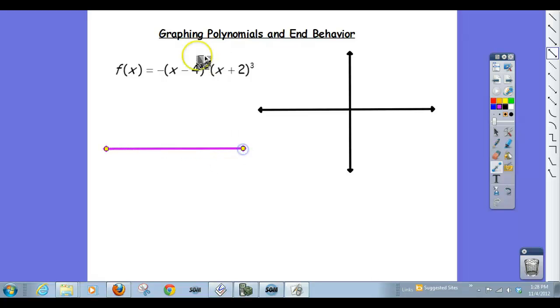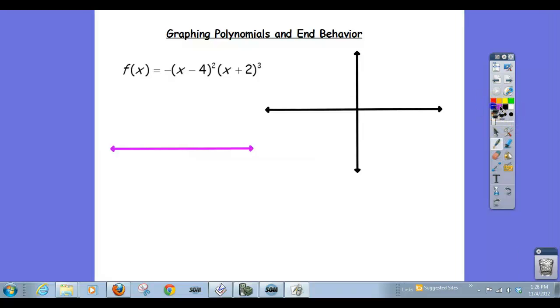So once again, once the polynomial is in factored form, I can figure out what I need to know about it by analyzing the behavior in between the zeros. So one of the zeros is a 4. One of the zeros is a negative 2, so I probably should have done that first. Okay, and so now I get this, and so I can put those on my number line.